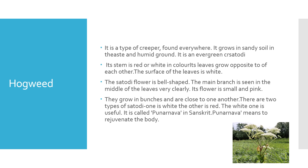The next one is Hogweed or Satori. Satori is a type of creeper found everywhere. It grows in sandy soil, in waste and in humid ground. It is an evergreen creeper. Its stem is red or white in colour. Its leaves grow opposite to each other. The surface of the leaves is white. The Satori flower is belt-shaped, with the main branch seen in the middle of leaves very clearly. Its flower is small and pink, growing in bunches close to one another. Satori is a good diuretic and it increases formation and flow of urine, so it is highly effective and useful in kidney diseases. It is also useful in treatment of swelling, eye disorders and heart troubles.